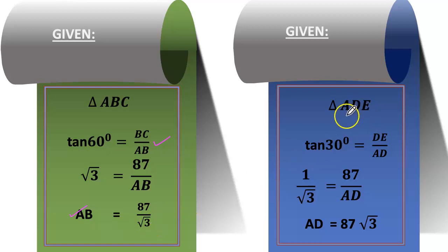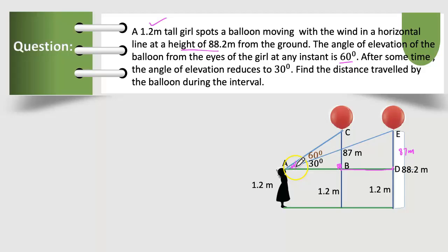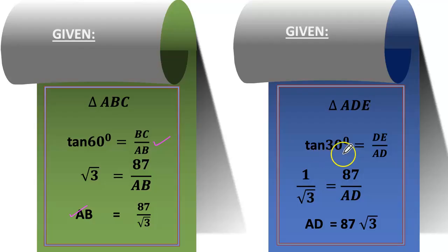Let's see the other triangle, right angle triangle ADE. So right angle triangle ADE, the angle of elevation is given 30°. So tan 30° is opposite by adjacent, DE by AD. Tan 30° is 1 by √3. 1 by √3 equals to 87 by AD. Cross multiply, we get AD equals to 87√3.